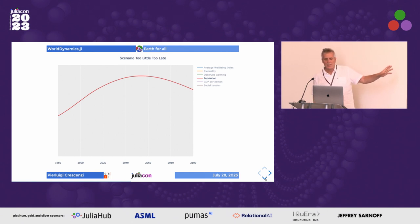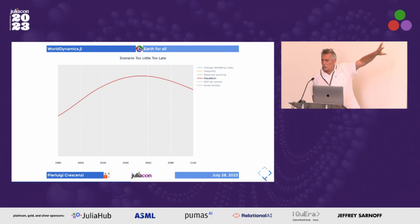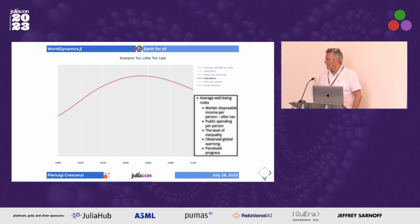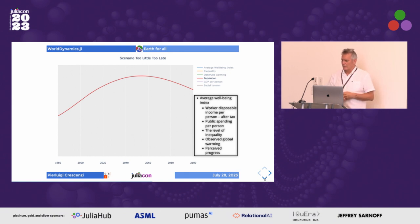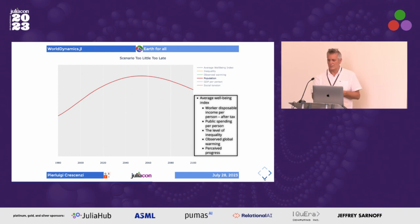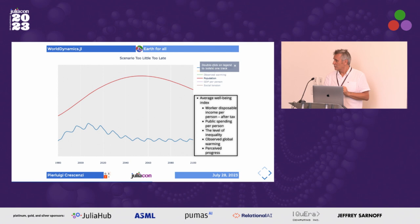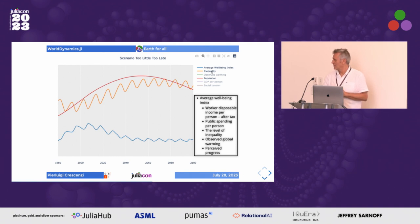Instead, if you look at the Earth for All model — the scenario in which you don't do anything — once again you have a population which decreases, not so fast as before, but this time researchers were most interested in analyzing what they call the well-being index, which is a combination of several economic, climatic, and social variables. They say: watch out, if we continue like this, the population will have this behavior, but the main point is that this index will decrease, and not only that — inequality will increase, even if GDP per person will increase.